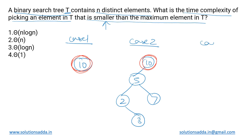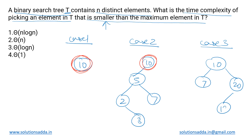Case three: when the root has both a left subtree as well as a right subtree. In this case, the root is not the maximum element — instead, the last node in the right subtree will be the maximum element. So in all three cases, let us determine what the result will be.